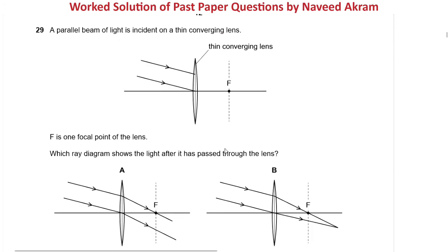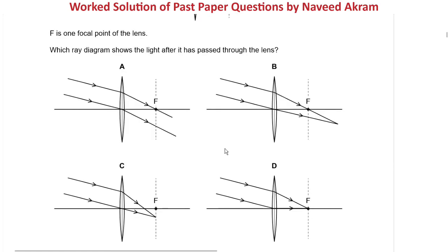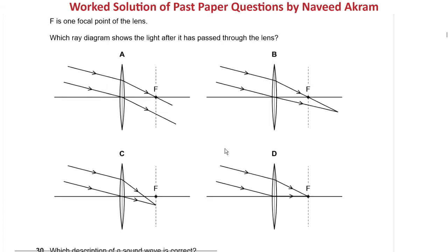Question 29 from October/November 2020 paper 1 variant 1: a parallel beam of light is incident on a thin converging lens; F is the focal point of the lens. Which ray diagram shows the light after it has passed through the lens? When parallel rays are incident on a converging lens they are converged to a point at the focal plane. Option A shows rays not converging at any point, so A cannot be the answer.